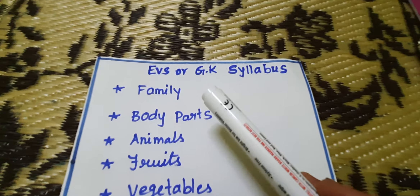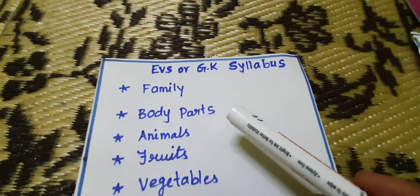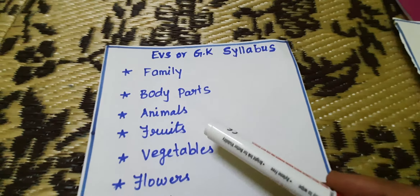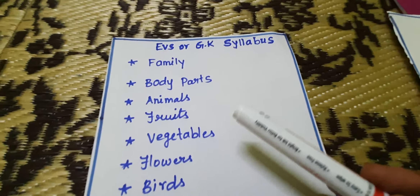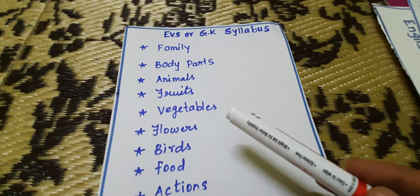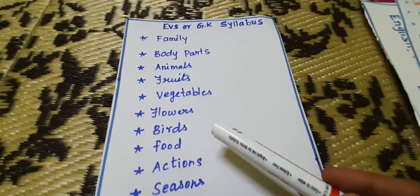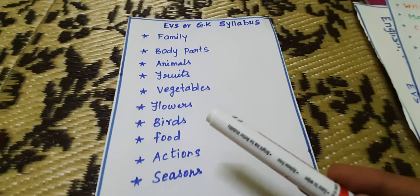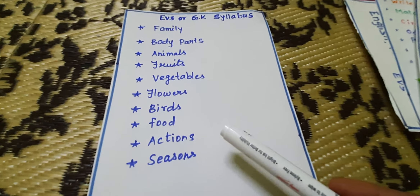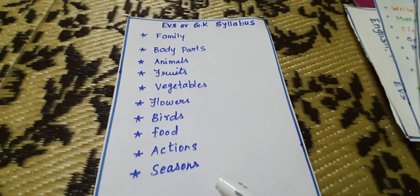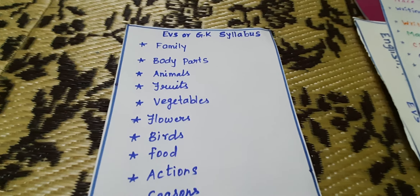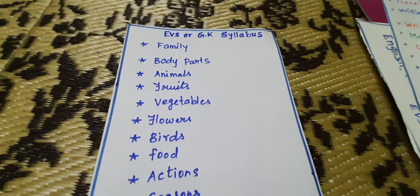Family, body parts, animals, fruits, vegetables, flowers, birds, food, actions, seasons. Syllabus for nursery class.